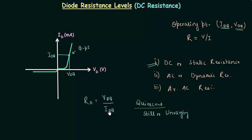If you increase the diode current, the DC resistance will reduce. So DC resistance decreases with increase in current through the diode, and DC resistance is higher near the knee of the characteristics because the diode current is lower there. For the upper part of the characteristics, diode current will be high and DC resistance will be lower. In reverse bias condition, the reverse saturation current is very low, and because of this the DC resistance will be high in reverse bias condition.